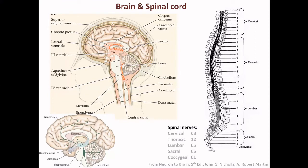Coming to the spinal cord, which runs within the vertebral column: there are seven cervical vertebrae, giving rise to eight cervical spinal nerves. There are 12 thoracic spinal nerves, five lumbar spinal nerves, five sacral spinal nerves, and one coccygeal spinal nerve. So there are a total of 31 spinal nerves.